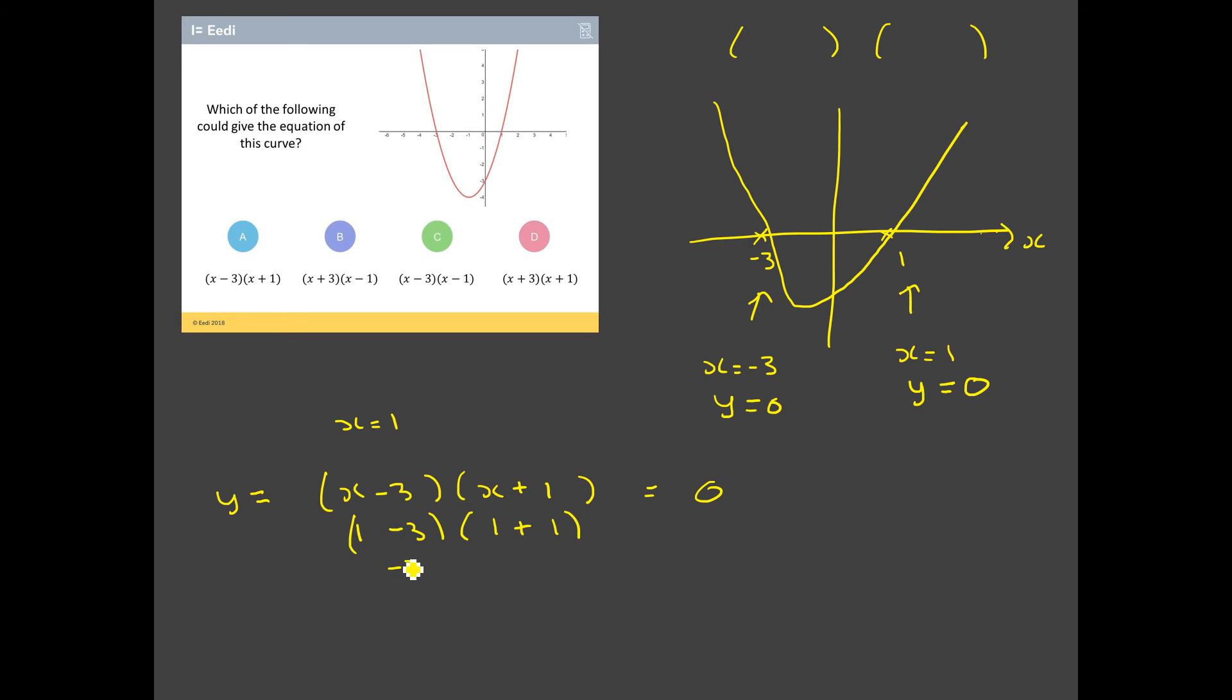Does that give me zero when I multiply them together? Well, one take three is negative two, and one plus one is two. That is not looking good because negative four is definitely not equal to zero. So that can't be the equation of the curve because I know when x equals one, y is zero. So that's a goner straight away. And in fact, this one's gone as well because look at that, x plus one. If I put one into there, that's not going to give me that value that I need.